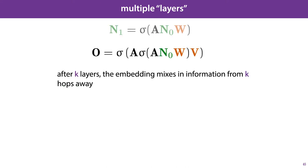And we can treat this as one graph convolutional layer. If we add multiple layers together, our network looks like this. And after k of these layers, the embedding mixes in information from k hops away from the current node. The output O is a matrix in which each column represents one of our nodes, based on both the initial embedding N0 and the local network structure. We can then use these representations O to perform our classification.